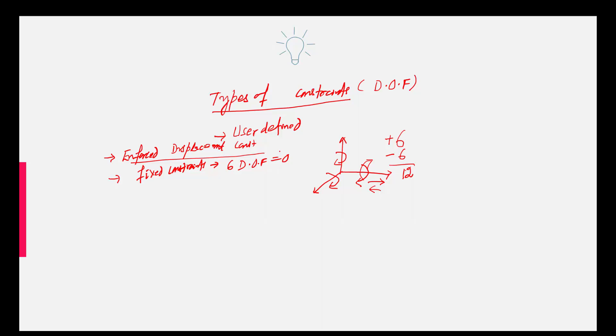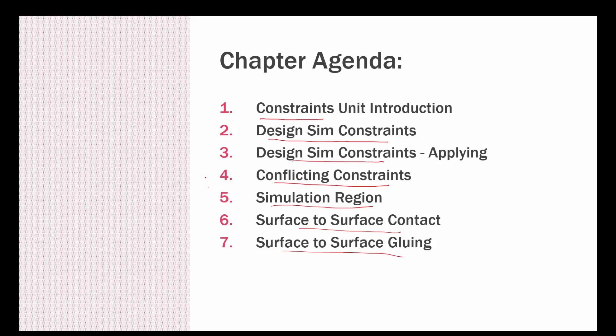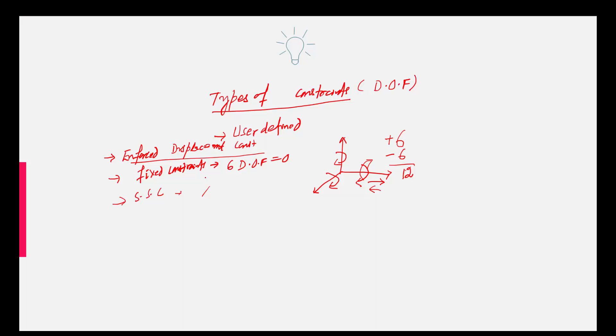Next is simply supported constraint. In simply supported, the translation normal to the defined plane is fixed. This basically is known as the simply supported constraint. That particular condition which you see, maybe if this is the body which you would like to attach and this is the ground, when you apply this as a simply supported constraint, the translation normal to the defined plane is fixed only.